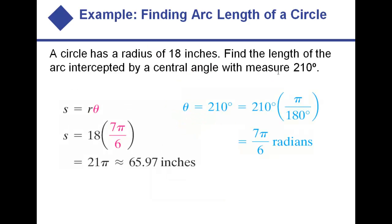With that simple formula we can solve questions about arc length. If our circle has a radius of 18 inches and we want to find the length of the arc with an angle of 210 degrees, we just plug everything in. Arc lengths are always measured in terms of radians, so whenever you're given an angle in degrees, the first thing you do is convert it to radians. Plugging in 18 for radius and 7 pi over 6 for the angle, we get approximately 66 inches.